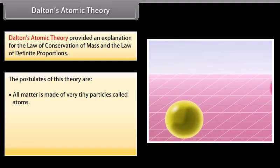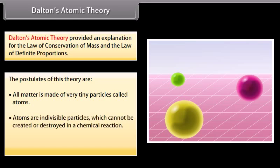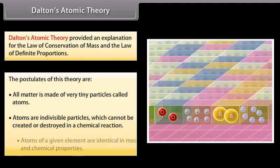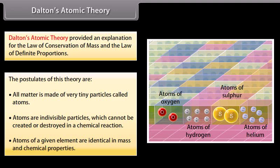1. All matter is made of very tiny particles called atoms. 2. Atoms are indivisible particles which cannot be created or destroyed in a chemical reaction. 3. Atoms of a given element are identical in mass and chemical properties. 4. Atoms of different elements have different masses and chemical properties.